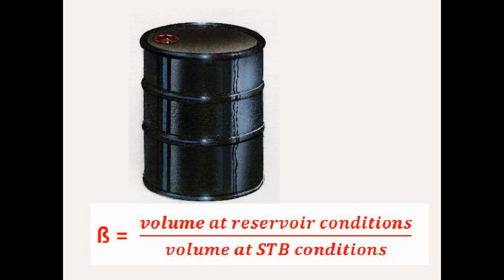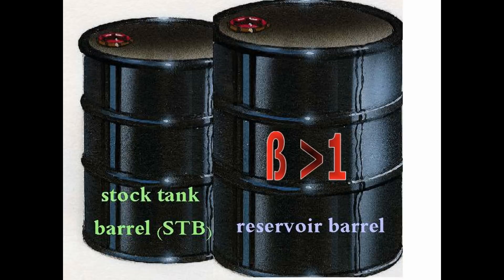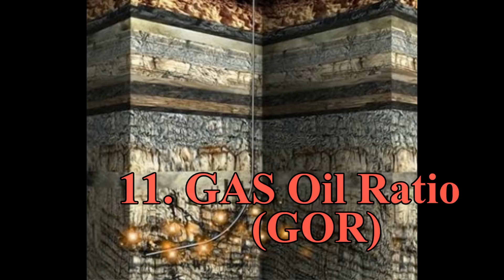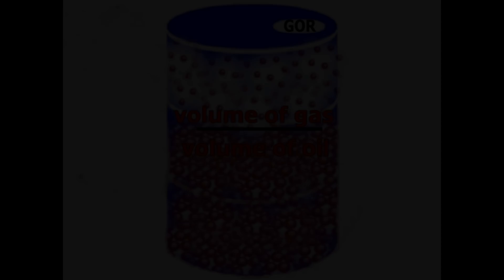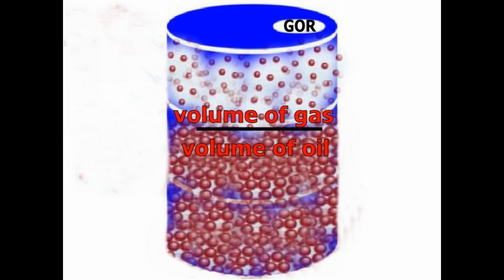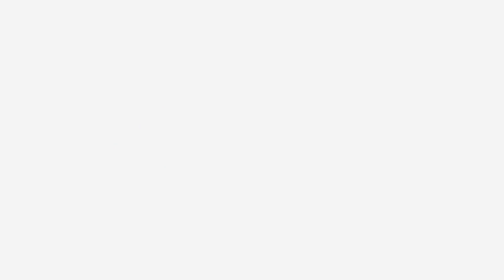Our next term is the gas-oil ratio, GOR. Here the volume of gas is divided by the volume of oil. Keep in mind, however, that the volume of gas is measured in standard cubic feet, or SCF, while the volume of oil is measured in stock tank barrels, or STB. The formula is GOR equals SCF divided by STB.